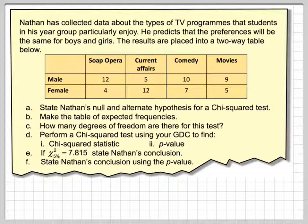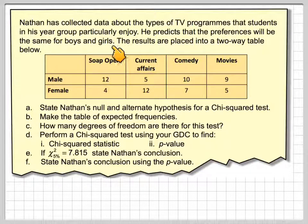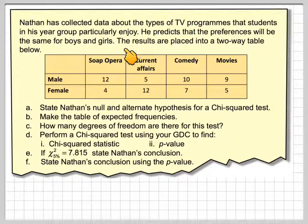In this video, we're going to look at what's known as the chi-squared test of independence, which is used for mathematical studies. Nathan has collected data about the types of TV programmes that students in this year group particularly enjoy. He predicts that the preferences will be the same for boys and girls — in other words, the preferences are independent of gender. The results are placed in a two-way table.